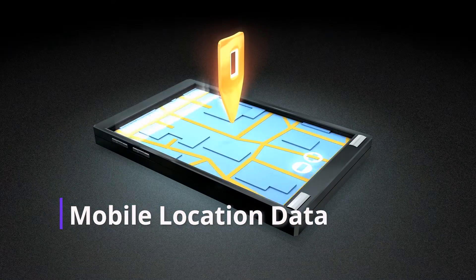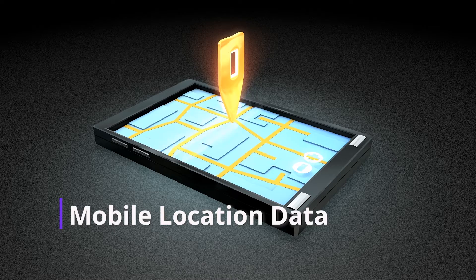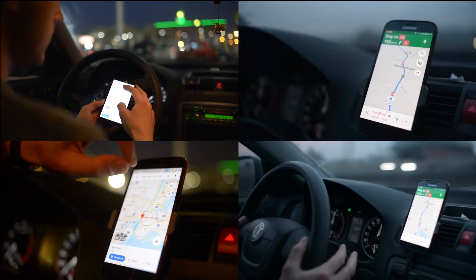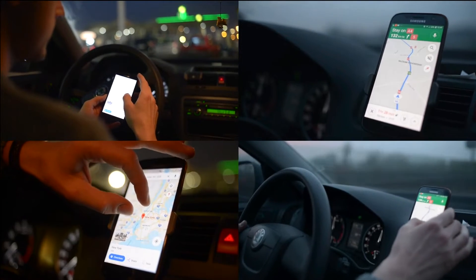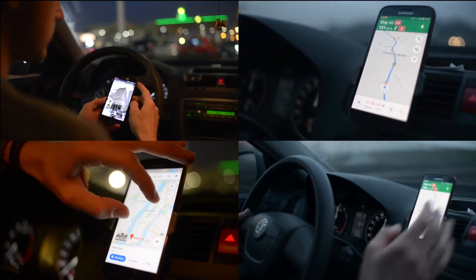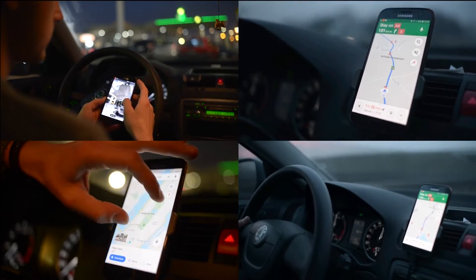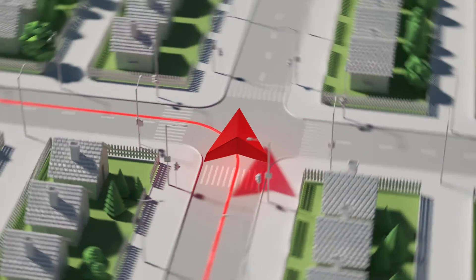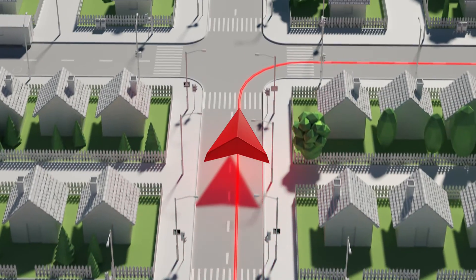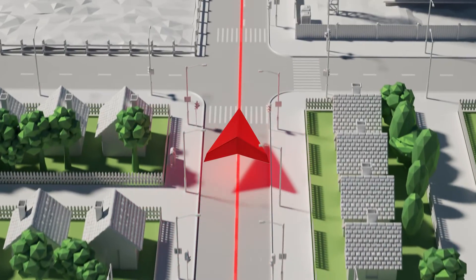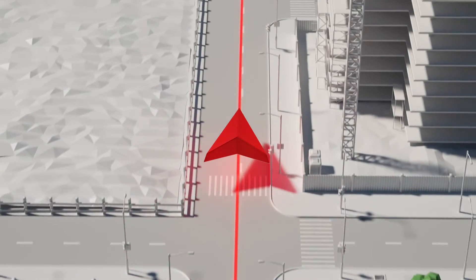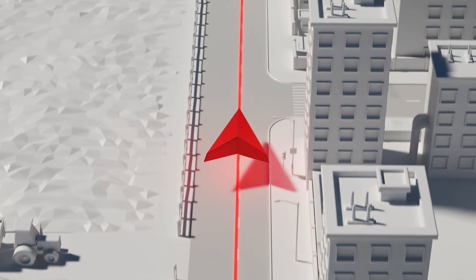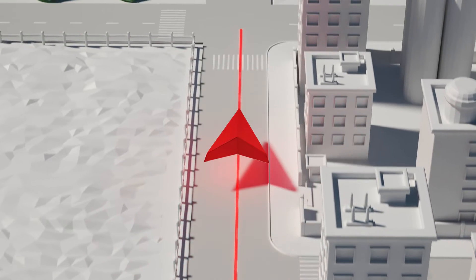Mobile location data is something we're seeing more and more of today with all of the devices that we're using. Data from smartphones and GPS-enabled devices can help in understanding traffic patterns and mobility, but it also tracks individual movements, raising significant privacy concerns — particularly when that location data can be associated with personally identifiable information for that person.